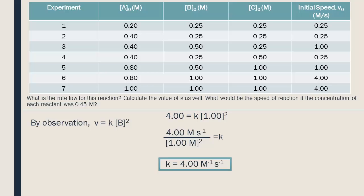Now that we know K, we can write the complete rate law equation. The last part of the question asks what the speed will be if all the reactants have a concentration of 0.45 moles per liter. We insert 0.45 into our equation. We find that at this concentration, the speed of the reaction will be 0.81 meters per second.